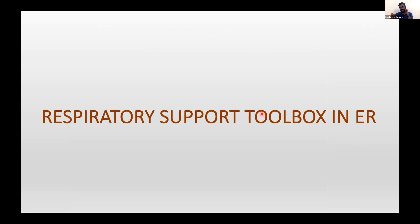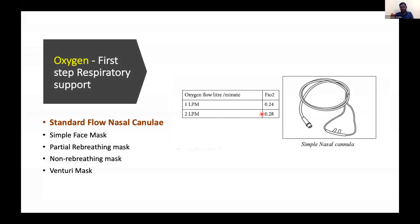Now let us understand what is available in the toolbox in the emergency room — whether it is a primary setup, a district level hospital, or a tertiary care ER. The toolbox is relatively simplified; it is better to know a few things in depth. First, oxygen support therapy: the list starts with low flow devices. The standard flow nasal cannula, at one to two liters flow, delivers around 28% FiO2. Increasing flow rate does not achieve much FiO2 increase and is not the right approach.